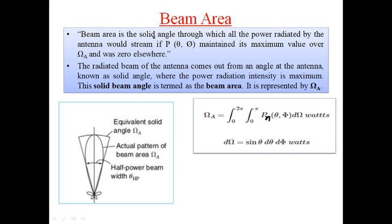We will first see the definition for beam area. It is a solid angle through which all the power radiated by the antenna would stream if P is maintained maxima over Ω_A and zero elsewhere. What this means is that beam area is the area in which all the power radiated is maximum, maintained constant, and in the rest of the areas it shows as zero.